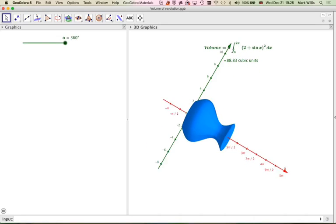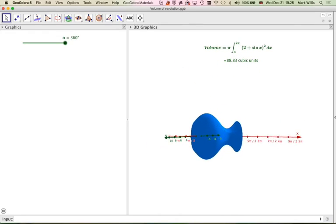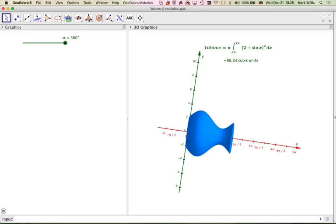So I've gone all the way around now, and if I look now, you can see I've got a 3D shape. And this is called a volume of revolution.